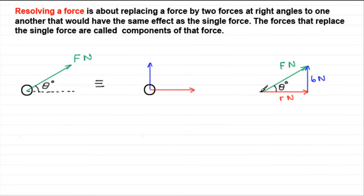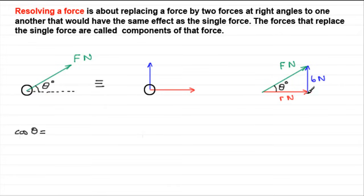Let's see if we can work out what the red component is. Assuming you're familiar with trigonometry: this side is the adjacent side to angle theta, this is the opposite side, and this is the hypotenuse. To work out R, we turn to the cosine function: cosine of theta equals adjacent over hypotenuse. The adjacent is R and the hypotenuse is F. Rearranging by multiplying both sides by F, we get R equals F cosine theta, or F cos θ for short.